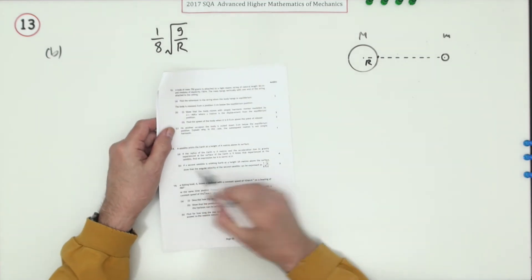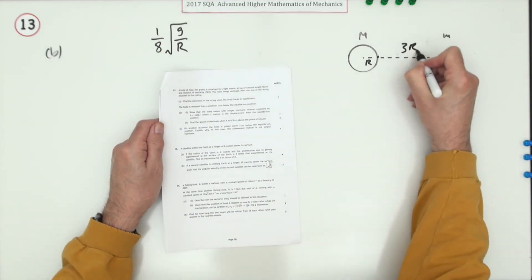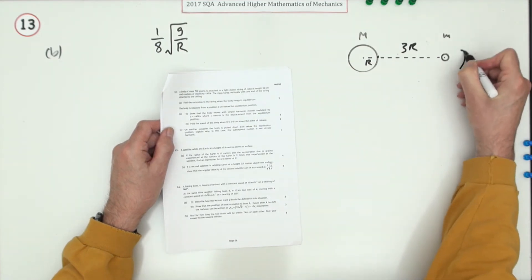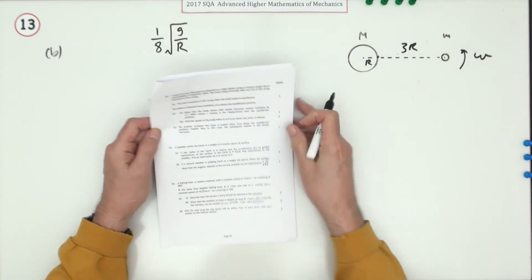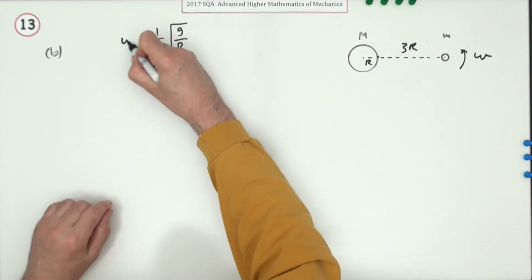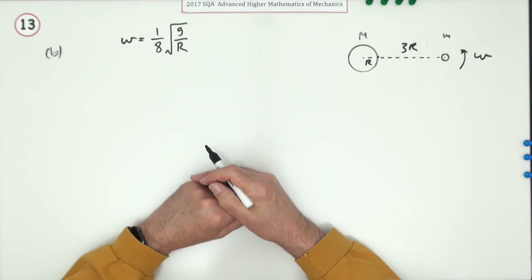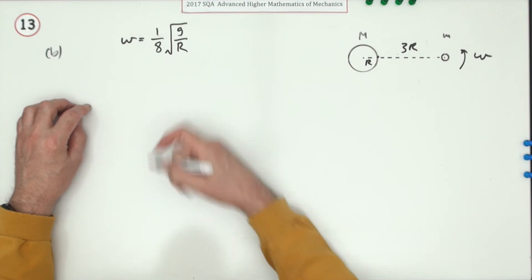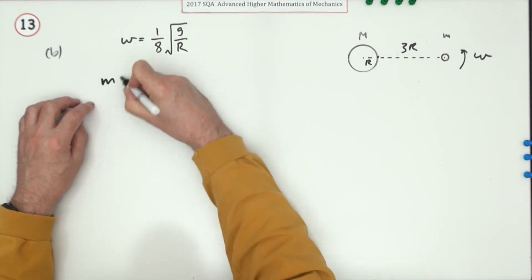Now for part B: if a second satellite is orbiting the earth at a height of 3r above the surface, so its angular velocity, so we'll just call that omega, can be expressed as this. So for three marks you have to show that omega equals one eighth of root small g upon capital R.